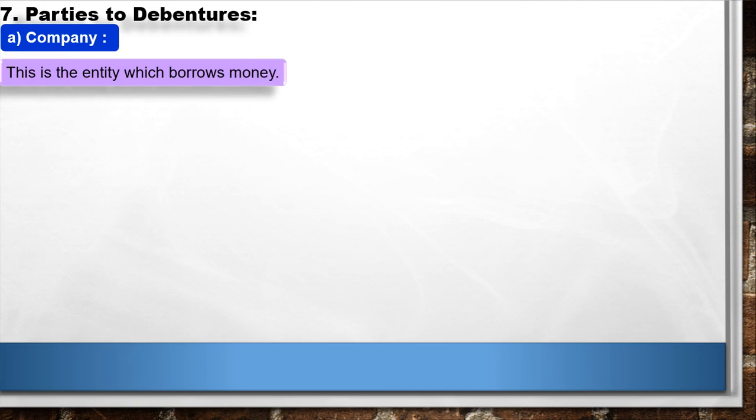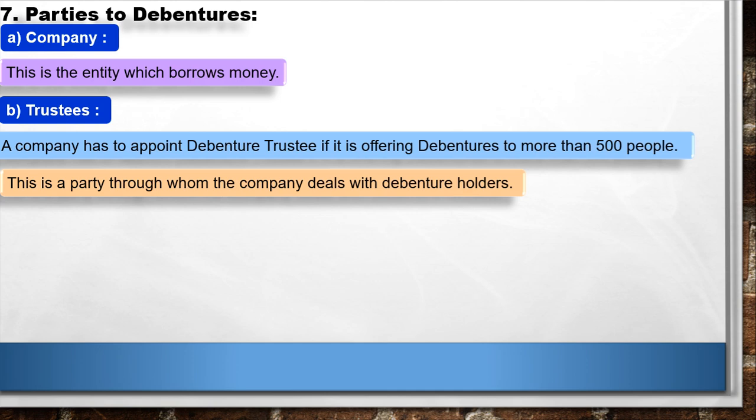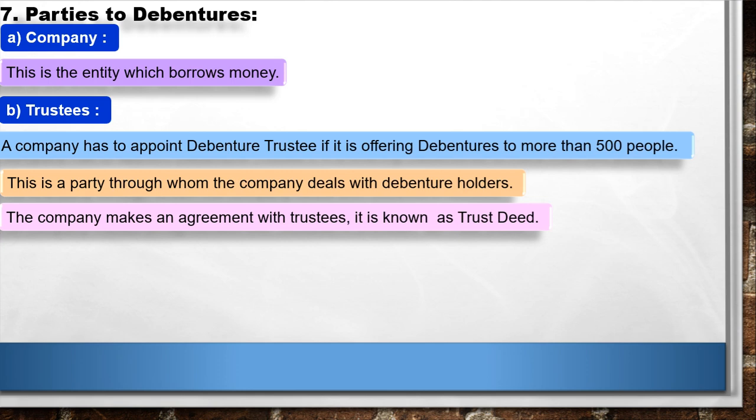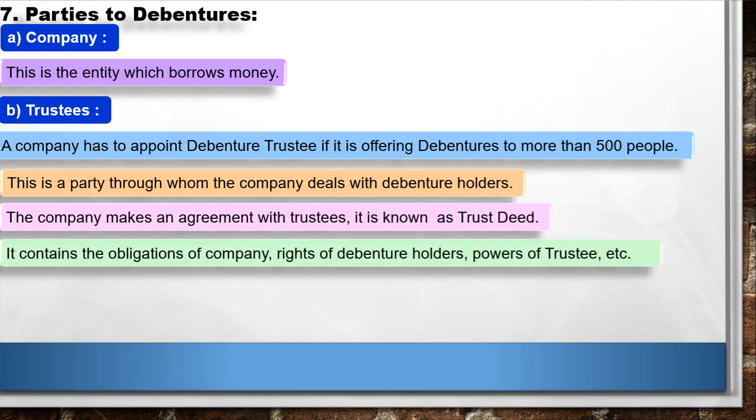7. Parties to Debentures: A. Company — the entity which borrows money. B. Trustees — if the company is offering debentures to more than 500 people, it must appoint a debenture trustee. The company makes an agreement with trustees known as a trust deed, which contains the obligations of the company, rights of debenture holders, and powers of the trustee.